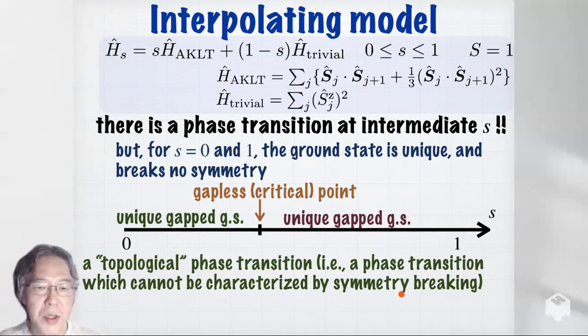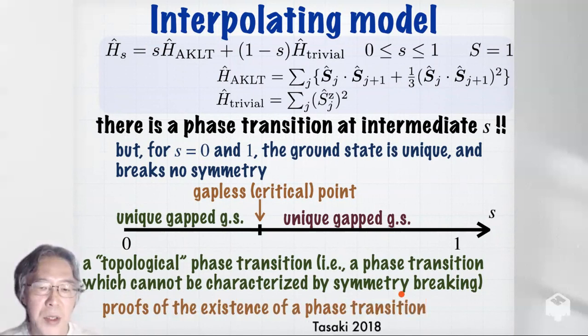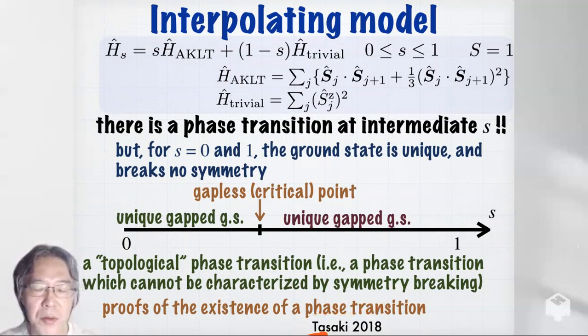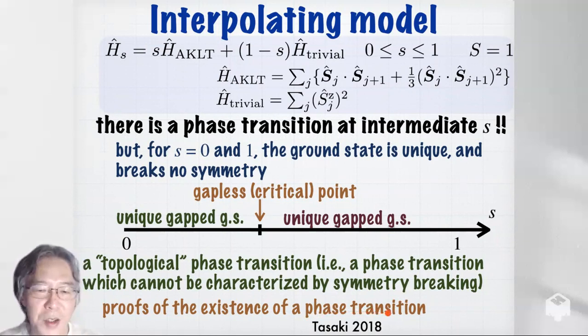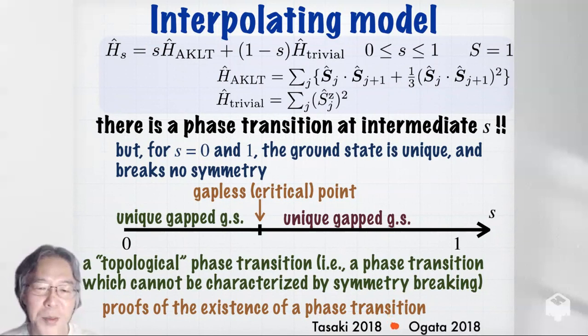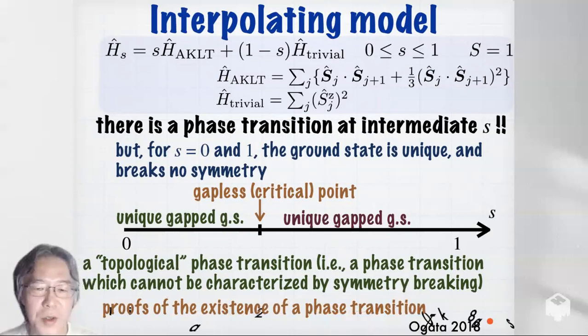The existence of such a topological phase transition had been conjectured for quite a long time. The mathematical proof was given only in 2018, actually by myself — I would say it's a very clever proof. But fortunately, soon after my work, Yoshiko Ogata came up with a beautiful, almost perfect theory of symmetry-protected topological phases, and from her theorem we get a proof that the phase transition exists. I will discuss Ogata's result in part two, so you can safely forget about my result.